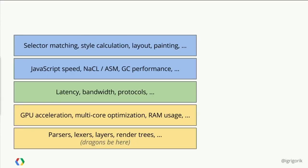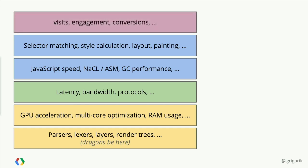So we've got to talk about CSS and selector matching and style calculations and layout and painting. And finally, the more business-minded of us will say this is all great, you've optimized all this stuff, but what really matters is visits, engagement, and conversions. Because ultimately, you can build a really fast thing that doesn't achieve these goals, and it's no good. And the trouble is, each one of these layers is actually very, very deep. So it's a very complicated subject.